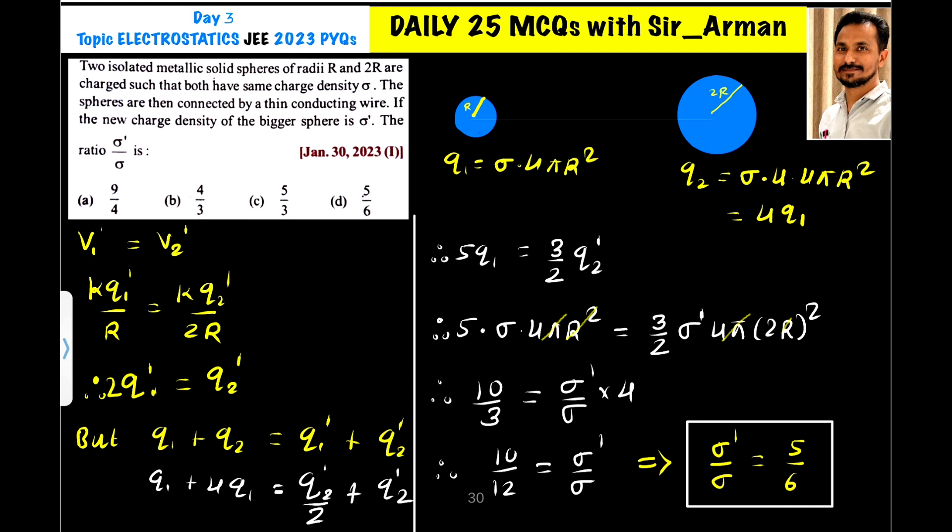Let's assume these two spheres are not in contact. Then the charge on sphere 1 is q1 equals sigma into area, so sigma into 4πr².